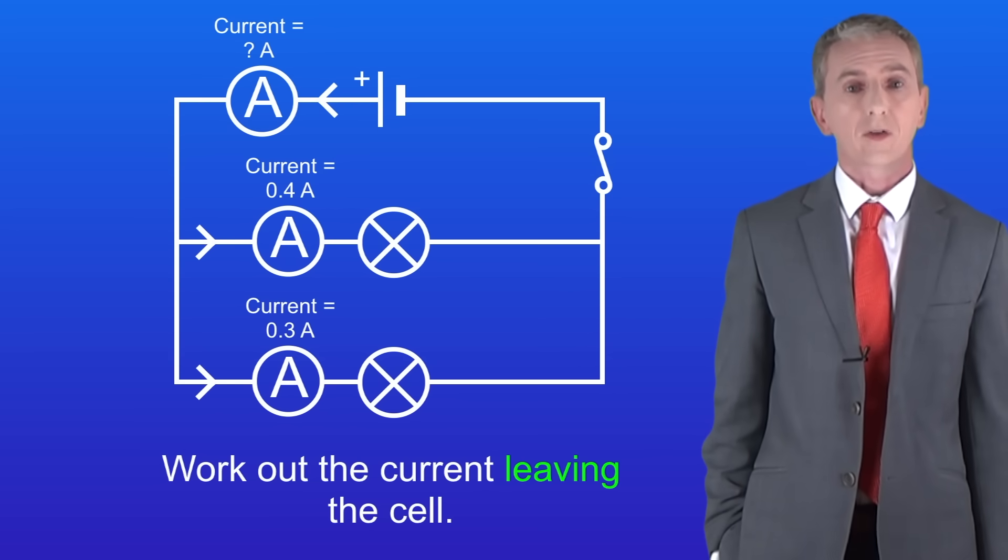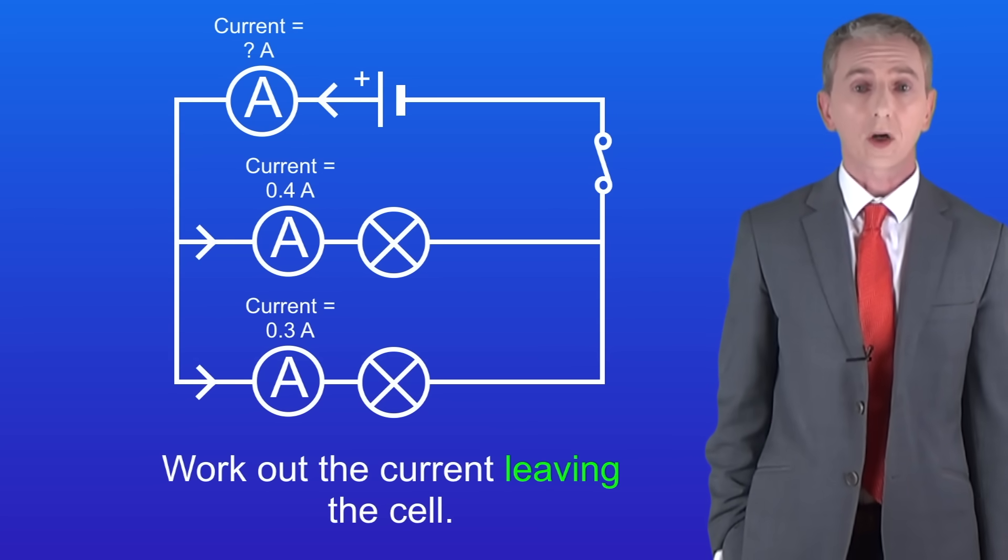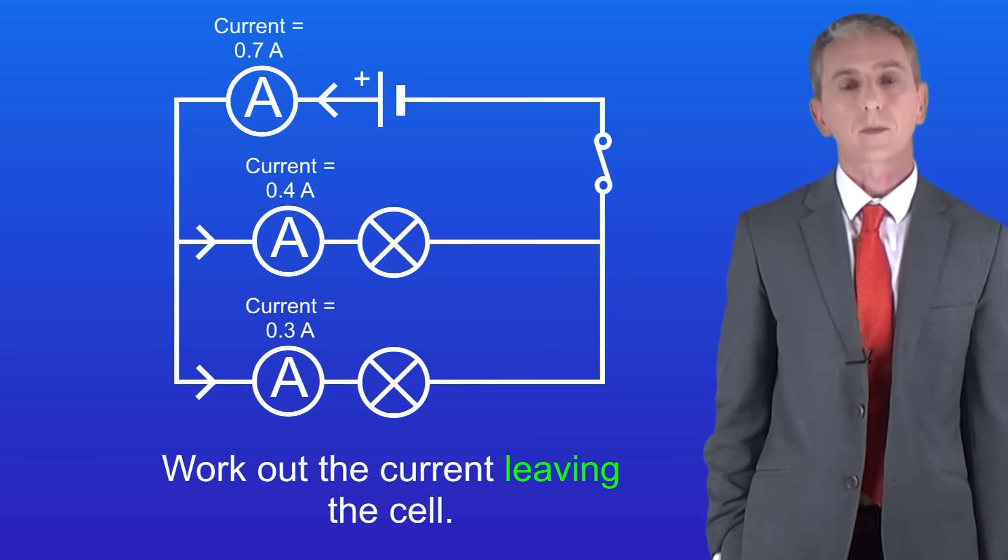Okay so the current in the upper branch is 0.4 amperes and the current in the lower branch is 0.3 amperes. We know that the current in the branches adds up to the total current leaving the cell. This means that the current leaving the cell must be 0.4 amperes plus 0.3 amperes which gives us an answer of 0.7 amperes.